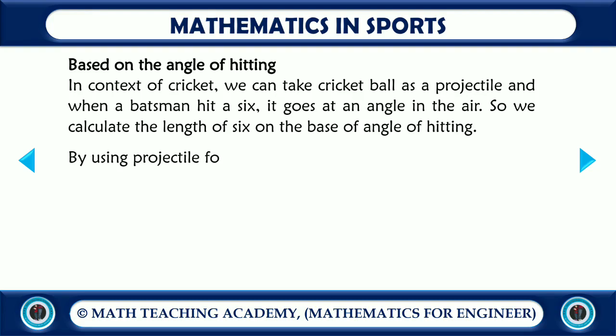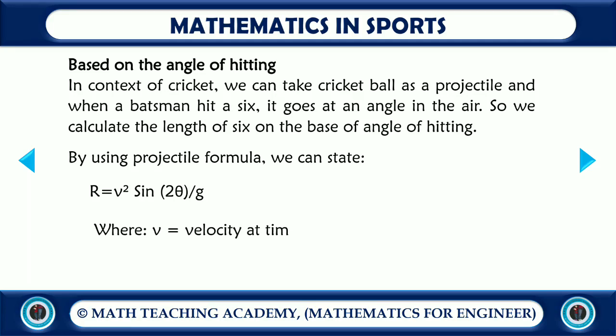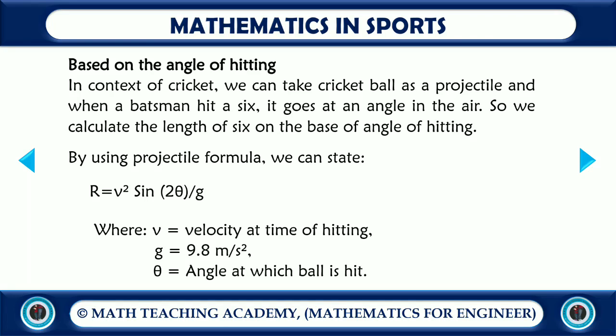By using the projectile formula, we can state: R = v² sin(2θ) / g, where v is the velocity at the time of hitting, g is the gravitational force (9.8 m/s²), and theta is the angle at which the ball is hit.